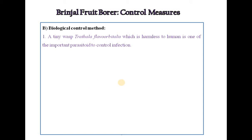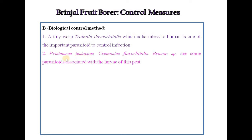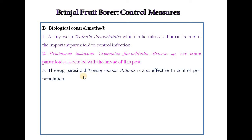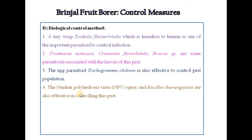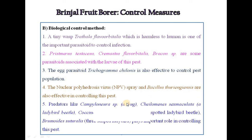The biological control methods include a tiny wasp, Trithyla flavorbitalis, which is harmless to humans and is an important parasitoid to control the infestation. Pristimeris pestaceus, Cremastus flavorbitalis, and Bracon species are some parasitoids associated with the larvae of this pest. The egg parasitoid Trichogramma pyloneus is also effective in controlling the pest population. Nuclear polyhedrosis virus spray and Bacillus thuringiensis are also effective in controlling this pest.